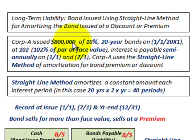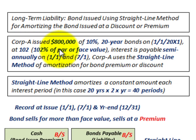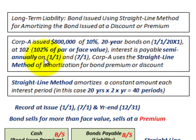Corporation A issues $800,000 worth of bonds at 10%. They're 20-year bonds on 1/1/20X1 at 102, meaning 102% of the par or face value. The face value of our bonds is $800,000, and the interest is payable semi-annually on January 1st and also on July 1st — twice a year.